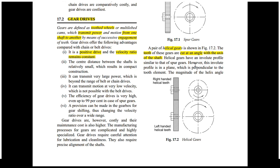Before going into that, we will first recall the basics of gears. Gears are wheels on which teeth are mounted, used to transmit power from one shaft to another by means of engagement. At the point of contact, the relative velocity between the two gears is zero, so no slipping takes place. Because of no slipping, these are called positive drives, and the velocity ratio remains constant.